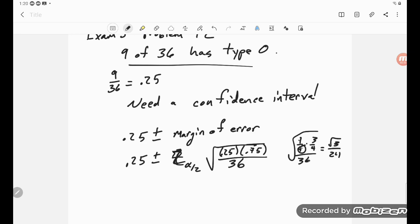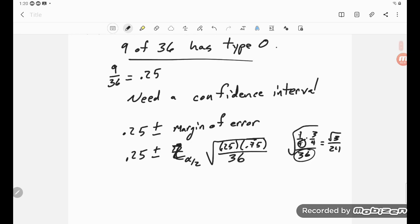Because I'll get a 4 up here and a 6 down there. So it looks like the square root of 3 over 24, or whatever the heck that is. You got a 0.25 plus or minus, and then you pick a reasonable number here.